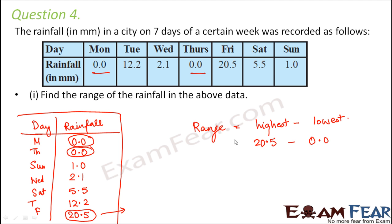So therefore the range of rainfall is 20.5 millimeters. So this would be the range of rainfall in the above data.